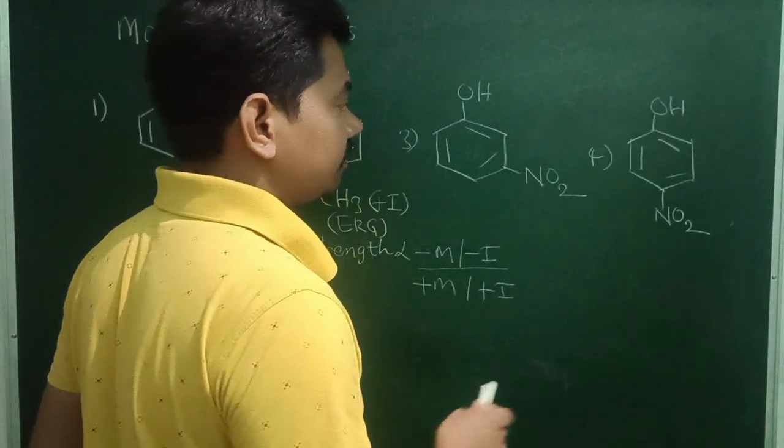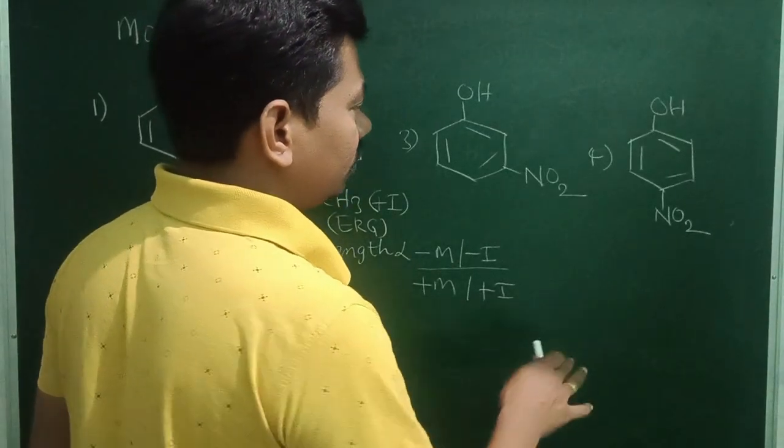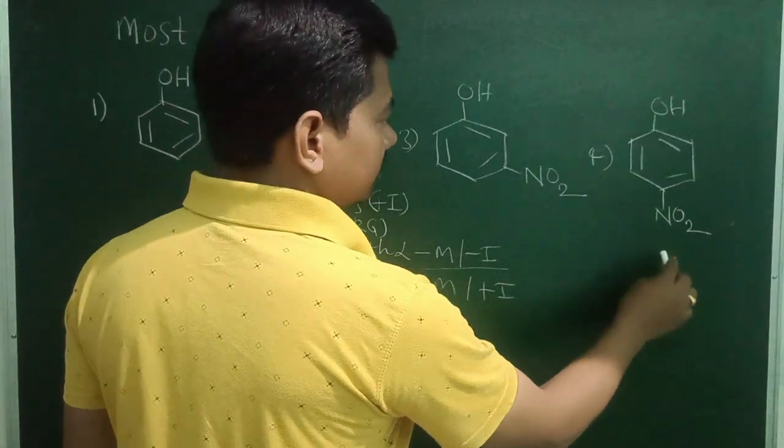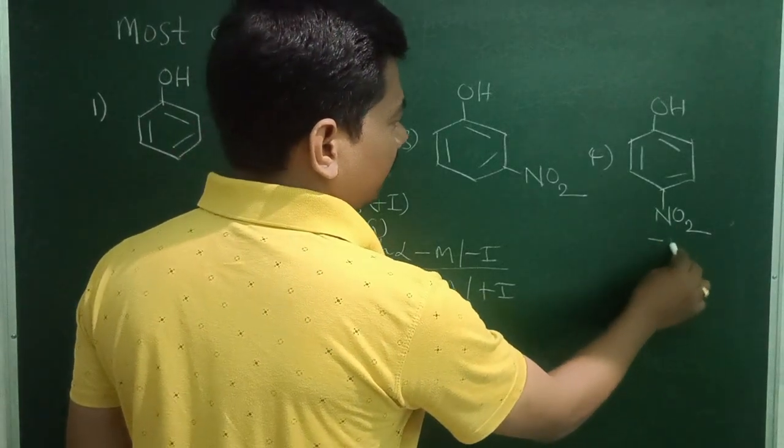Then here nitro is minus I and minus M groups. Strong minus I, strong minus M. But nitro group is minus M